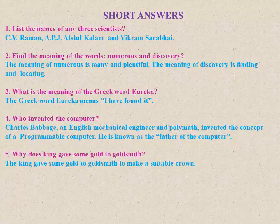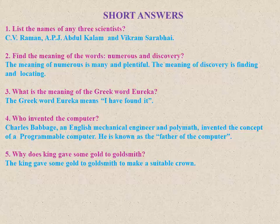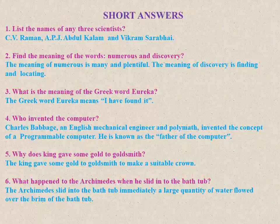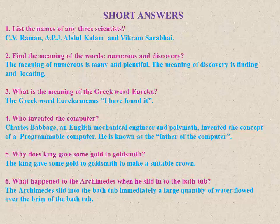Fifth question: why did the king give some gold to the goldsmith? The king gave gold to the goldsmith to make a beautiful and suitable crown. Sixth question: what happened to Archimedes when he slipped into the bathtub? When Archimedes slipped into the bathtub, immediately a large quantity of water flowed over the brim of the bathtub.